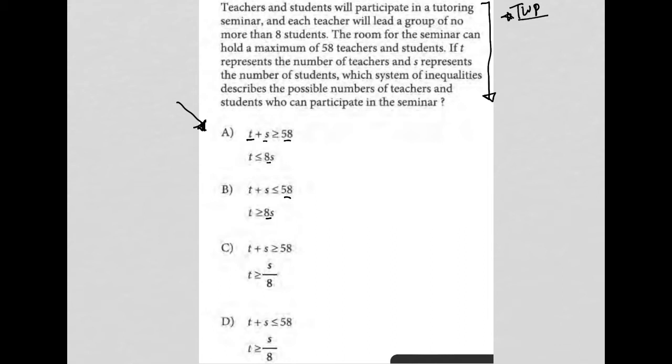So the first sentence of the question says, teachers and students will participate in a tutoring seminar and each teacher will lead a group of no more than 8 students. So the number of students that you can have per teacher is going to be less than or equal to 8. And that's for one teacher. Every teacher has less than or equal to 8 students.